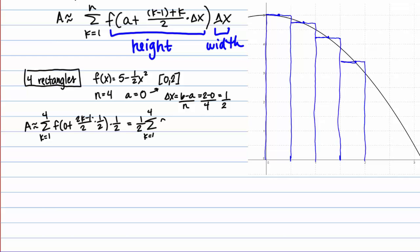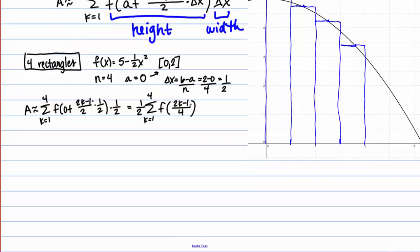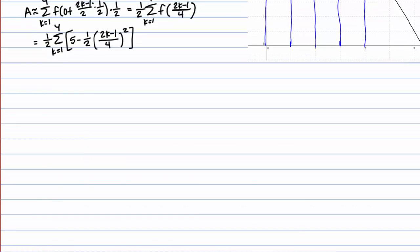I end up with f of 2k minus 1 over 4. My next step is to take 2k minus 1 over 4 and plug it into my function. My function is 5 minus one half x squared, so 5 minus one half, taking this whole expression and plugging it in for x, all squared. Now I need to work all this out. Ultimately, I'm looking for a numeric value. I need to get this to a form where I can use my summation formulas.